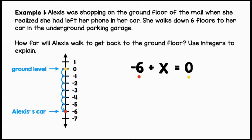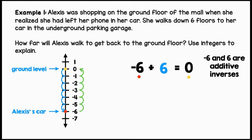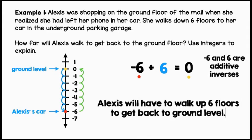Let's count how many floors Alexis has to walk back up to get to ground level. Six. We can say that negative six and six are additive inverses. Alexis will have to walk up six floors to get back to ground level.